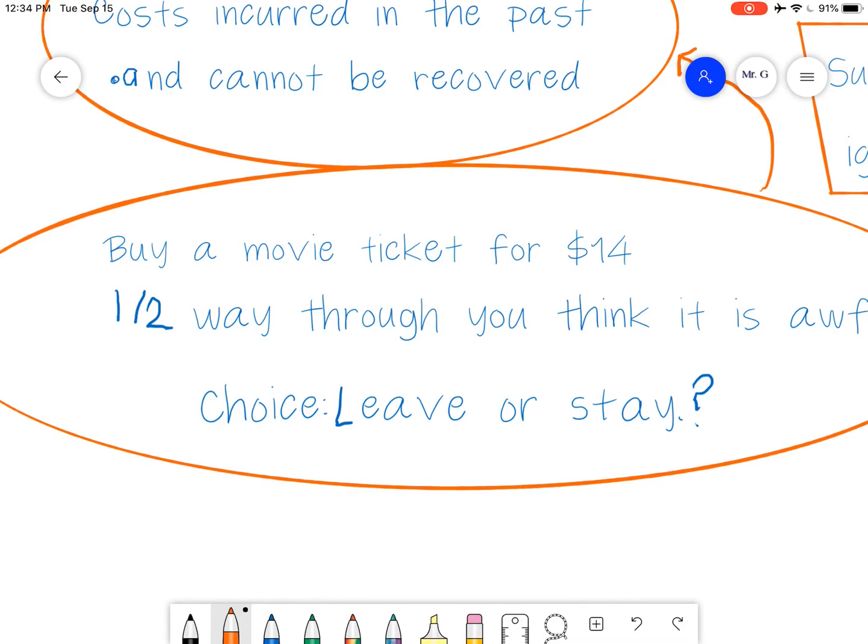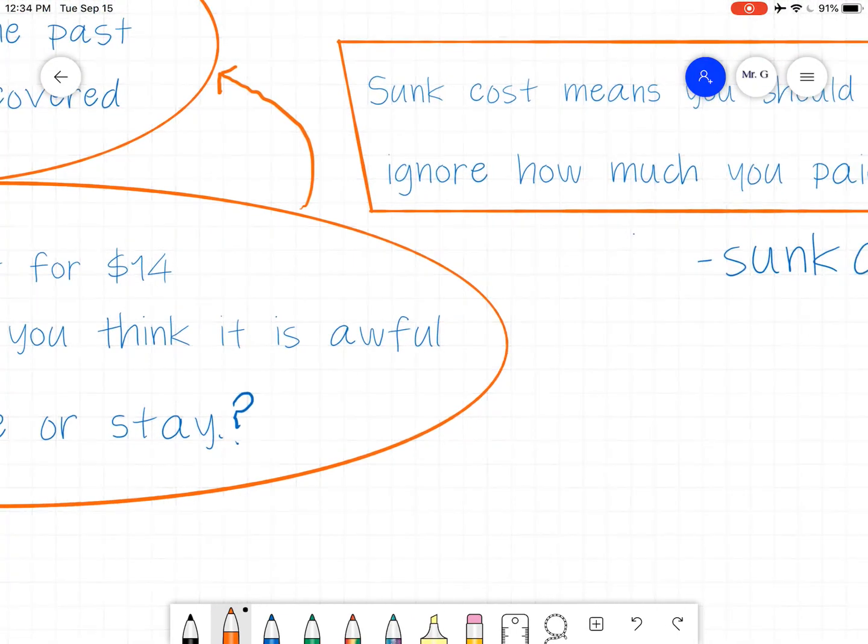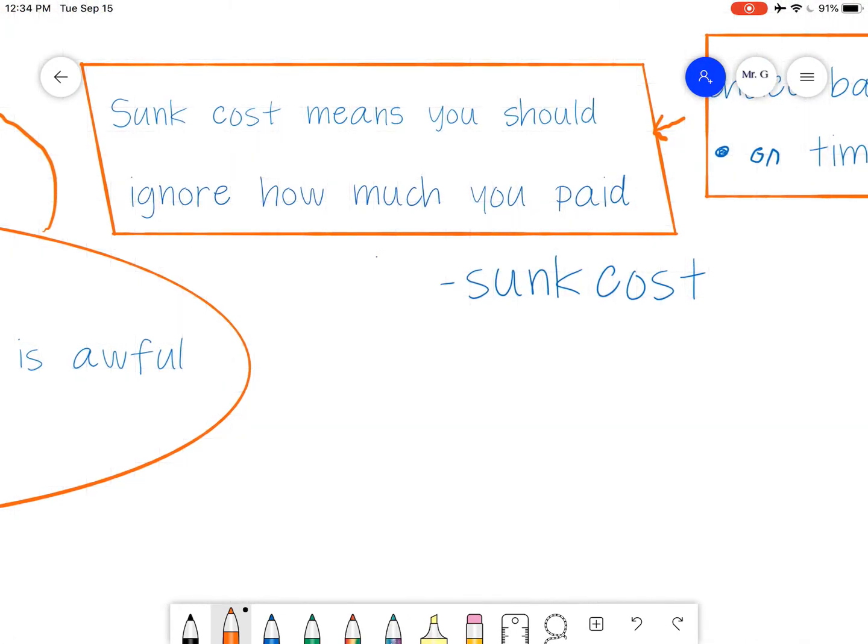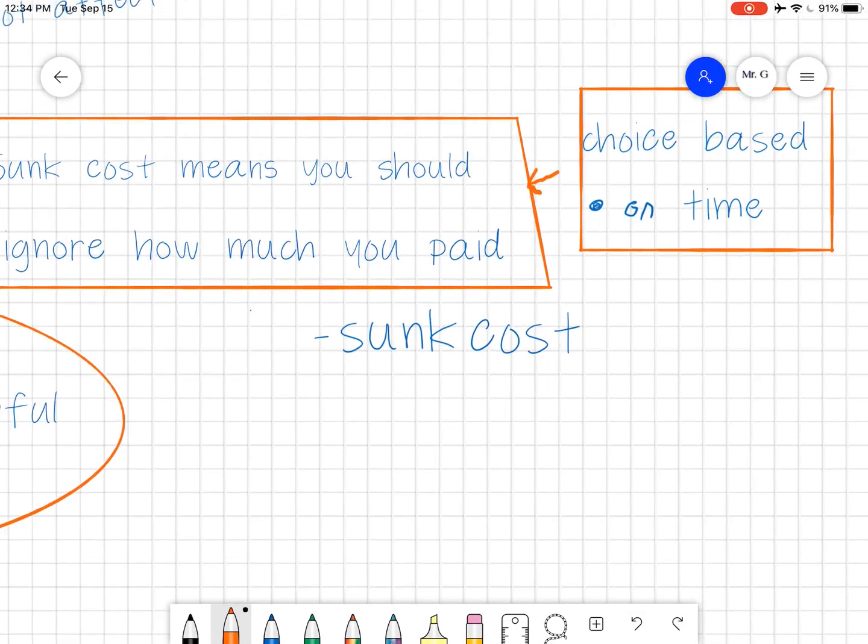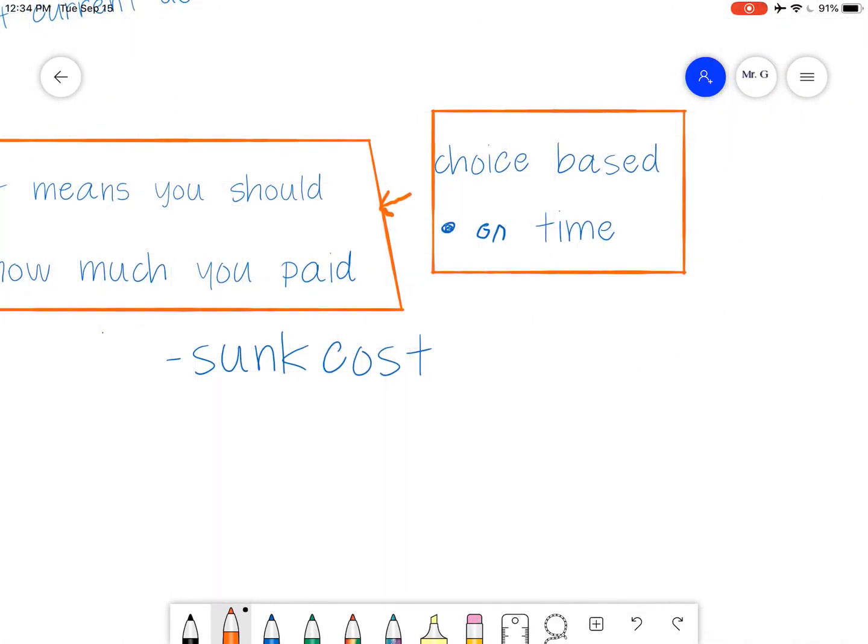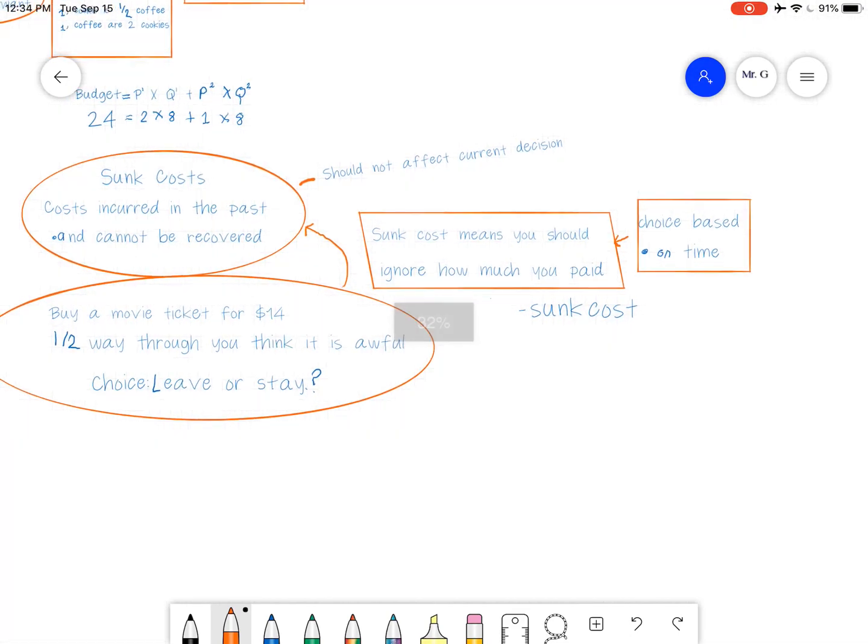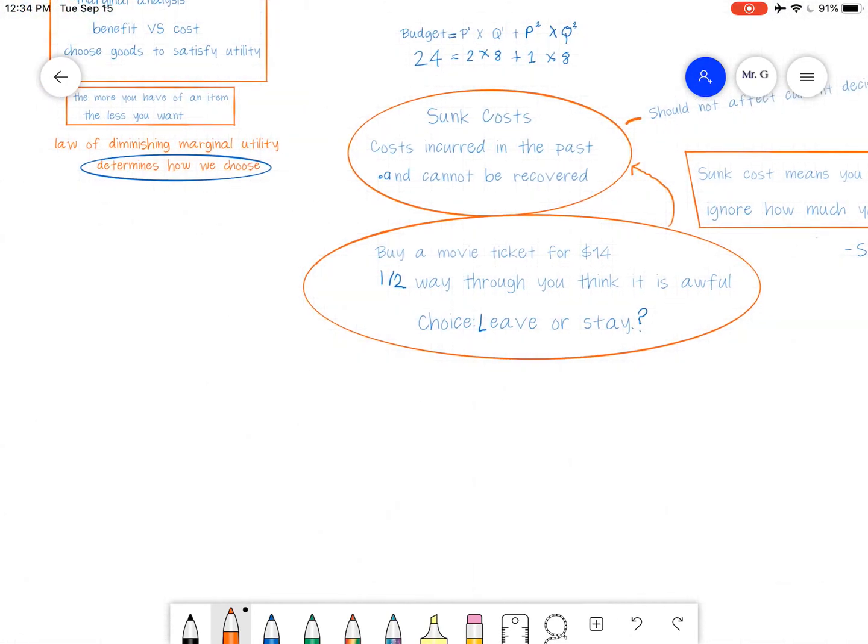Is it worth my time to stay? And you're looking at the benefit of staying and watching this movie. It's like, well, maybe I just like finishing the movie. I want to know how it ends versus the cost. Well, I'm wasting my time. I could go do something else instead. And that should really be what you're looking at in that kind of decision. So sunk cost means you should ignore how much you paid, the $14, and your choice should be based purely on time. So that's what you should be going through on that.